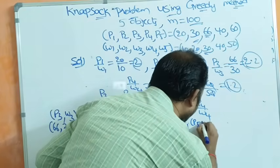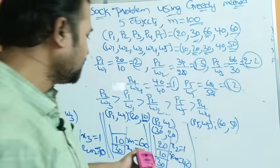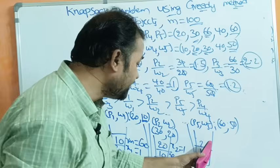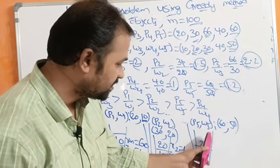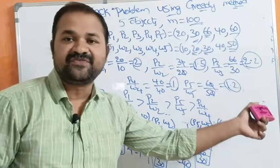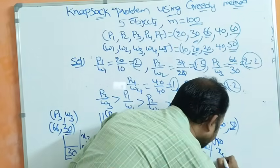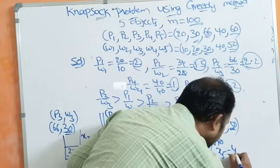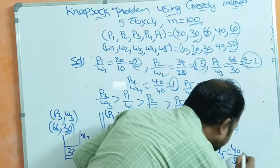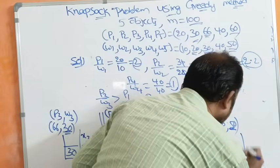Next object is P5/W5. Profit is 60 and weight is 50. The remaining Knapsack size is 40 kg, but the object weighs 50 kg, so it cannot be placed fully. We use the fractional formula: x5 = remaining size / actual weight = 40 / 50 = 4/5.